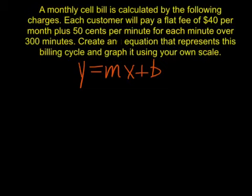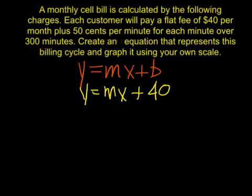Each customer has to pay a flat fee of forty dollars, so no matter how many minutes they use you're going to add forty dollars to the bill. That forty dollars would be the b. Whatever you calculate for minutes, you've got to add forty to the bill. Now for the minutes — it's fifty cents per minute for each minute over three hundred minutes — we have m and x, where should it go?